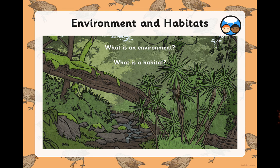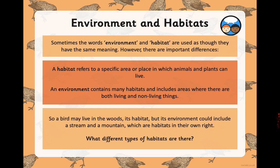Environments and habitats. What is an environment? What is a habitat? Hit pause, have a think. Sometimes the words environment and habitat are used as though they have the same meaning — we do this a lot in general speech. However, it's really important to note there are differences between those two definitions in science. A habitat refers to a specific area or place in which animals and plants can live. An environment contains many habitats and includes areas where there are both living and non-living things. Just re-read those definitions and check that you understand there is a difference between the two. Hit pause and re-listen if it's slightly confusing.